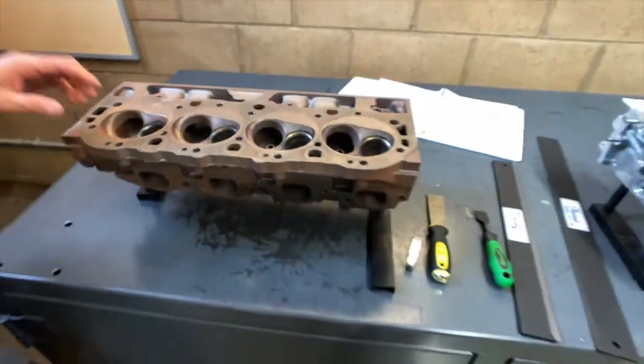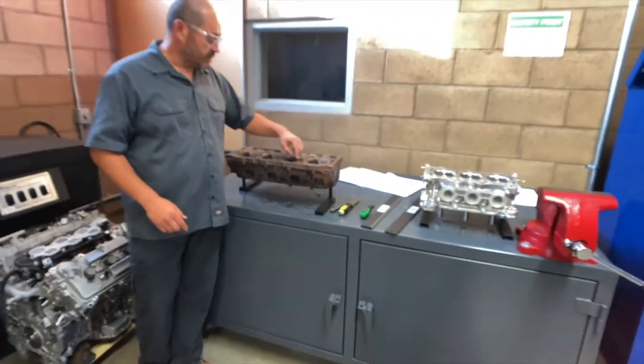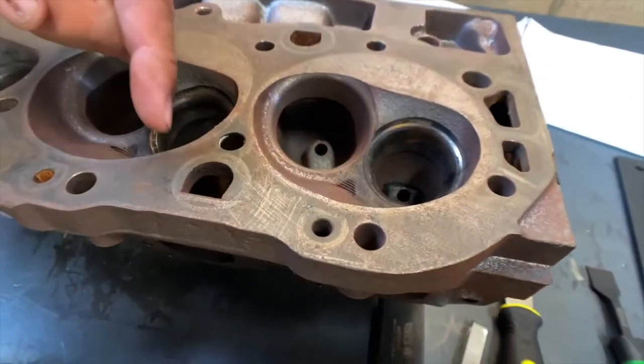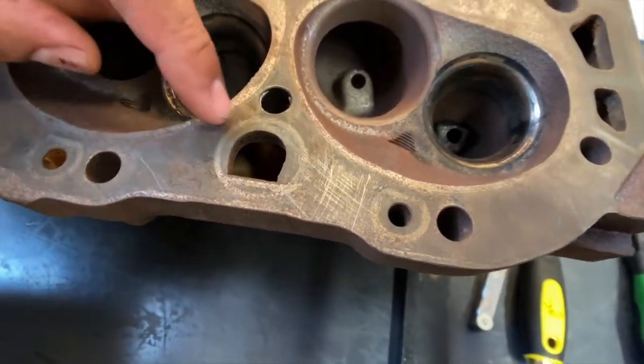One of the other locations, you want to look at the water jacket, from the water jacket to the combustion chamber. See if there's any cracks on this surface here because that's another location where the material is very thin.